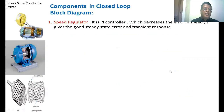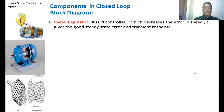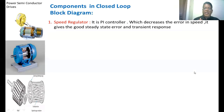Speed regulator: It is a PI controller which decreases the error in speed, giving good steady-state error and transient response. Steady-state error means the actual speed of the induction motor is the same as the reference value. Generally, many controllers are available — PI controller, PID controller, fuzzy controller, neural controller. Here, we have taken the PI controller.